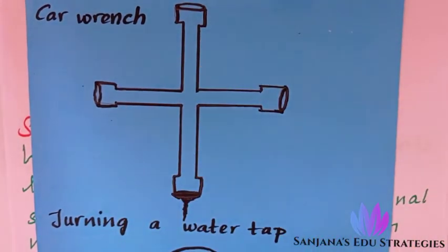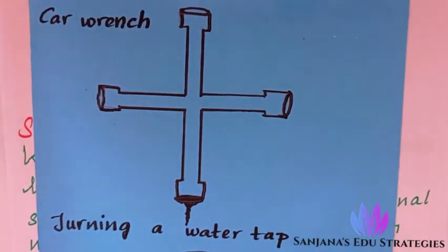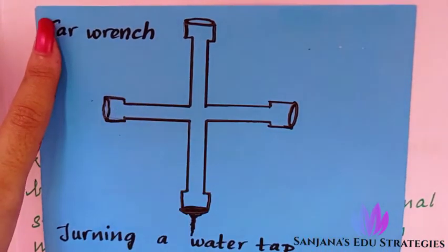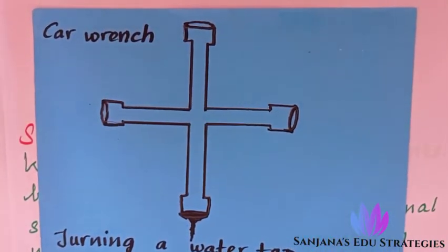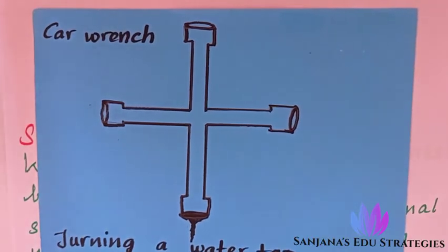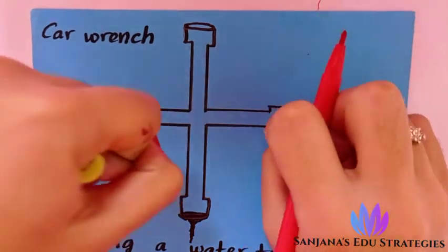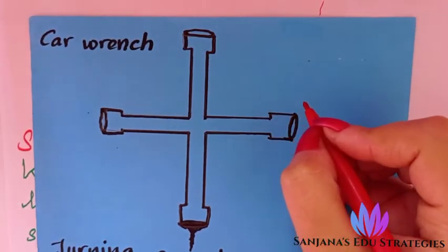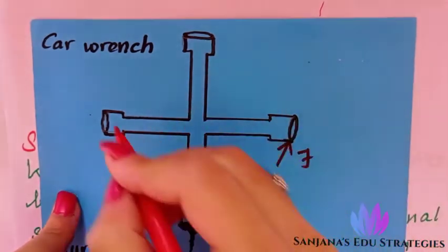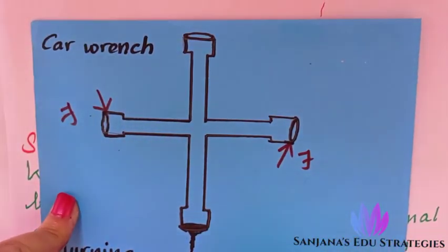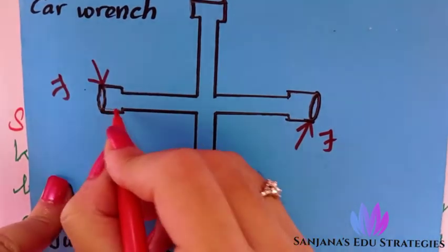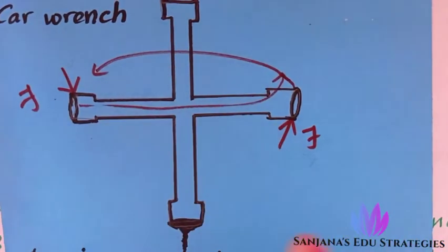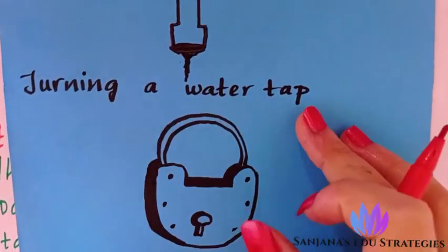Examples of couple: first is a car wrench, used to remove a nut or screw from a car wheel. We hold the wrench at two places with both hands and turn it. We apply force in one direction on one side and force in the other direction on the other side, causing the wrench to rotate and remove the nut.